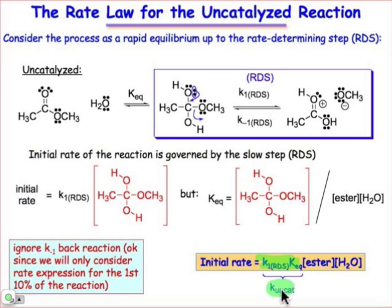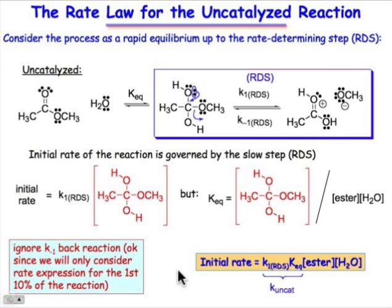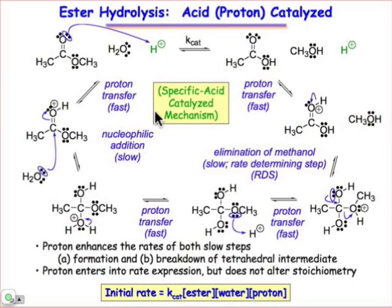The only small other detail I want to point out is in this box over to the lower left-hand side: we're going to assume that the backward reaction is negligible, and we can get around that by dealing with the very first few percent of product formation. In the very first few percent of product formation, the amount of product is negligible, so it doesn't contribute at all to the backward rate. This is just a simplification so we can focus only on the forward rate, really just to fully understand what we mean by that initial rate.